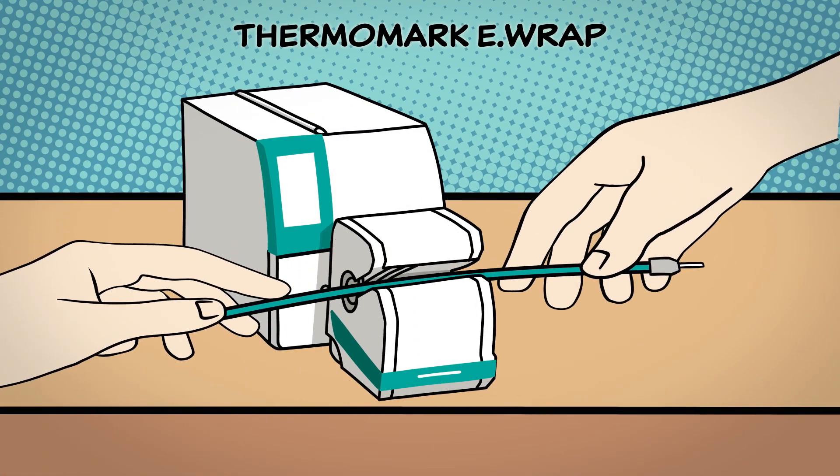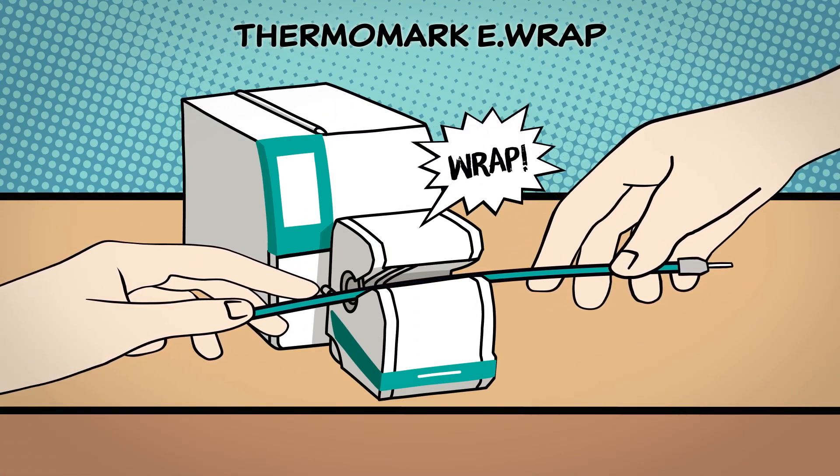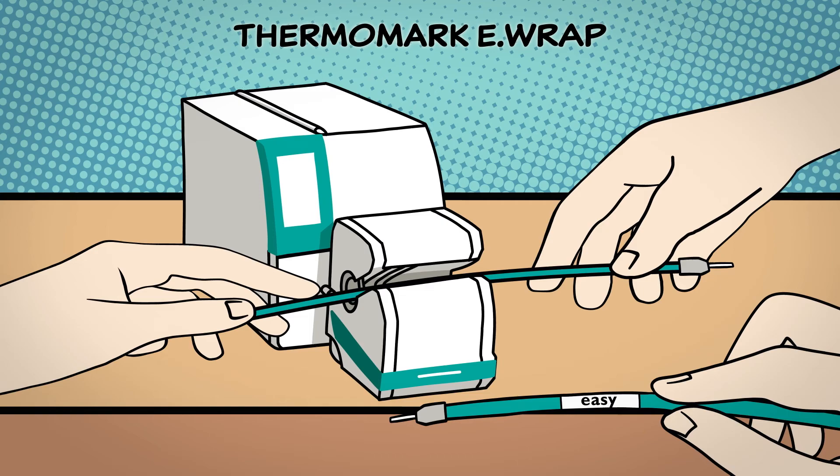The Thermomark E-Wrap can be used to mark cylindrical objects with wire-wrap labels at a defined position.